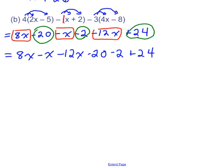And now we're ready to simplify. So 8X minus 1X is 7X. 7X minus 12X is negative 5X. Negative 20 minus 2 is negative 22. Negative 22 plus 24 is positive 2. And that would be our final answer because we don't have any like terms left.